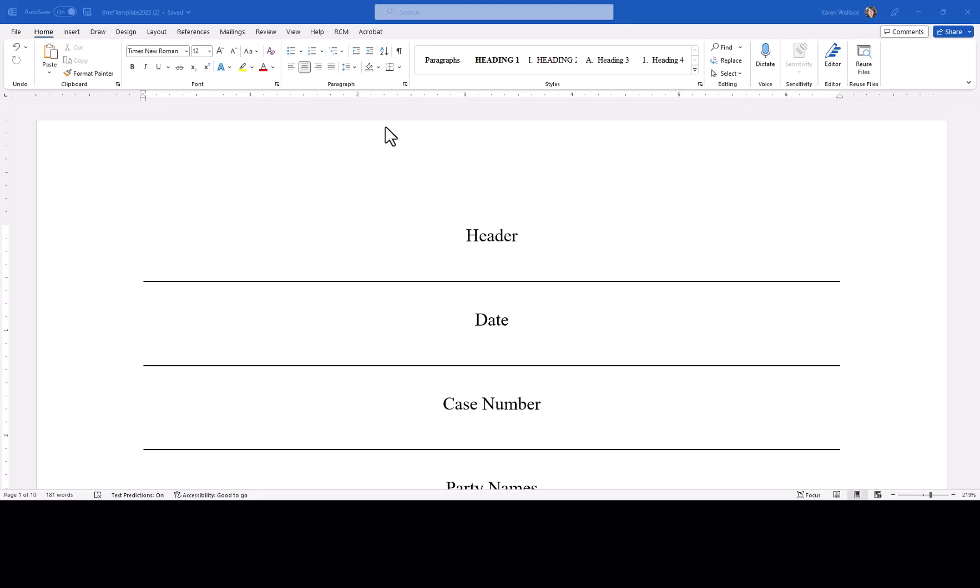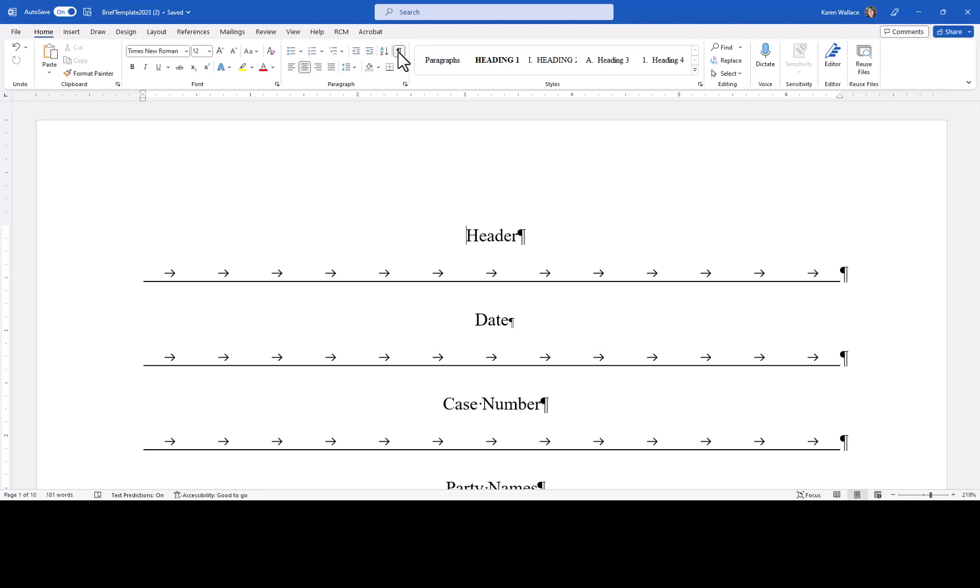This is the brief template. First I want to show you the Show Hide Paragraph button. It's on the Home tab and it looks like this. It's a toggle button so it turns on and then off. When I click to turn it on, it shows the characters that would otherwise be hidden such as paragraph markers and tabs.